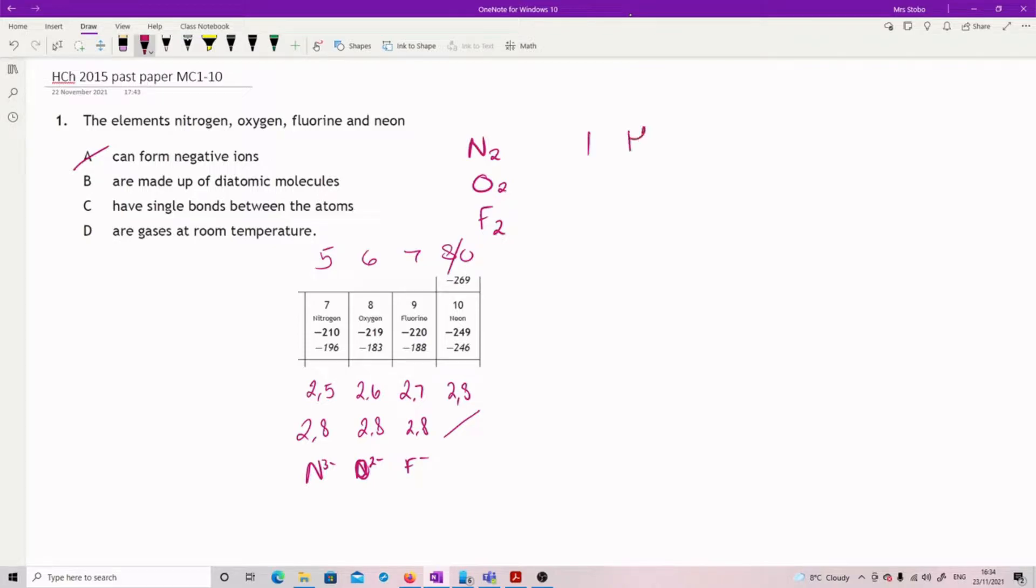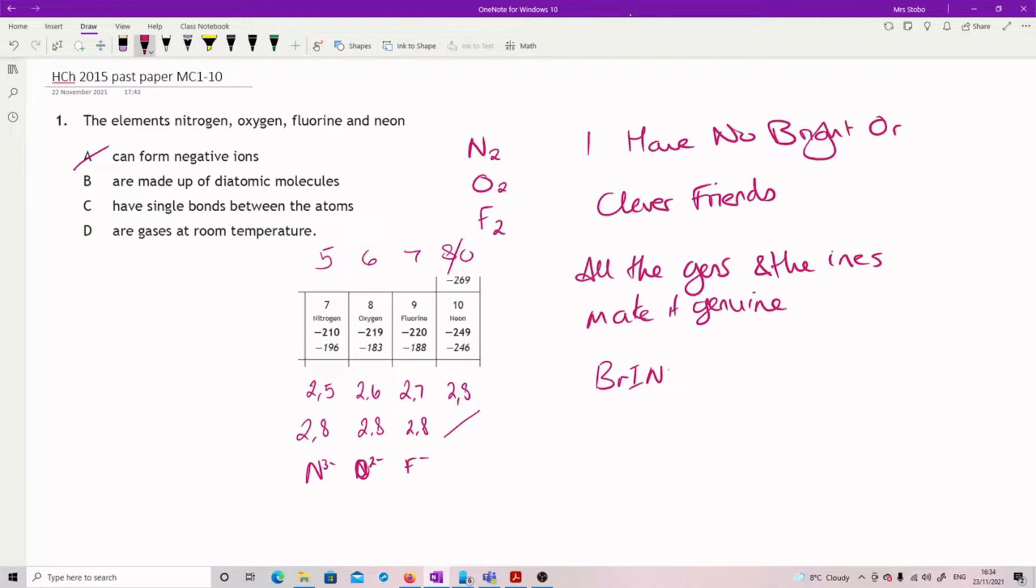I have no bright or clever friends, or if you like, all the gens and all the ions make it genuine, make it genuine. Or if you prefer your random things like BrINCl HOF or HONKLE FIBER, any of the nonsense ways you remember it. But these are your diatomics.